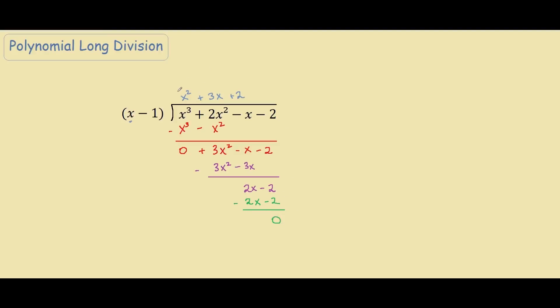Zero remainder, so this is our answer up here. And if you go ahead and plug this into your calculator, x minus 1 times this factor over here, you should get the answer x cubed plus 2x squared minus x minus 2.